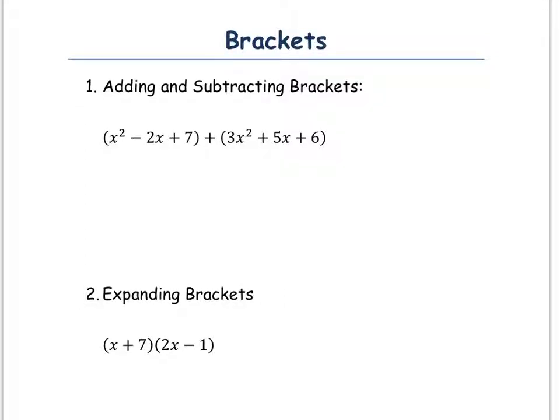Here are a few skills we're going to need involving brackets. We're going to look at adding and subtracting brackets, expanding brackets, and then finally factorising brackets. The first one is adding and subtracting: x squared minus 2x plus 7, plus 3x squared plus 5x plus 6. All you have to do here is collect together like terms — like terms also refers to having the same power of x.